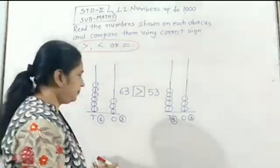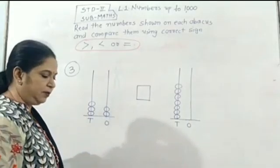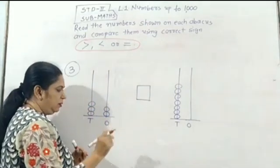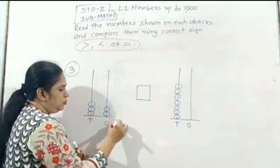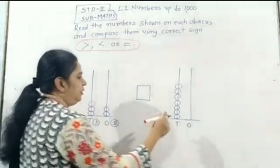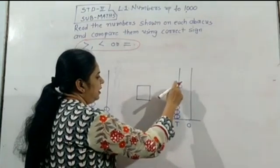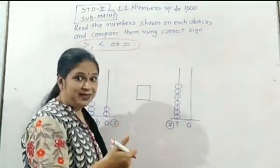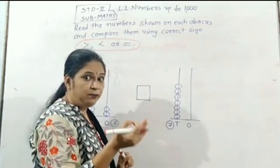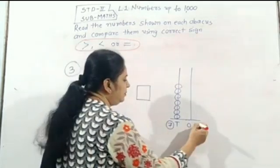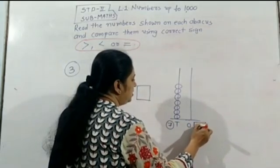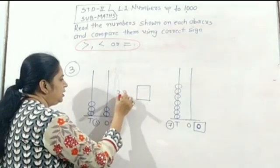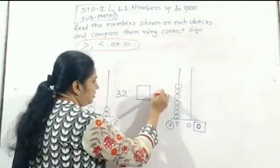Now we will go to the third pair. Count the tens beads: 1, 2, 3, 4, 5, 6, 7 — seven. Here there are no beads, meaning zero beads, so the number is zero. So the first number is 3, 2 — thirty-two. And the second number is 7, 0 — seventy.